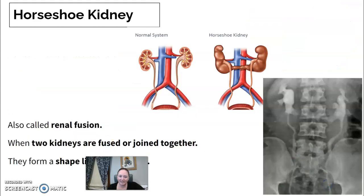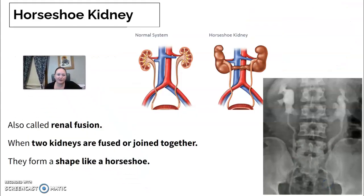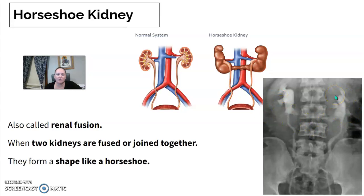A horseshoe kidney, also called renal fusion, is when the two kidneys fuse together in a horseshoe shape. This can be visualized on an abdominal x-ray or IVU, and an example image shows the characteristic fused appearance.